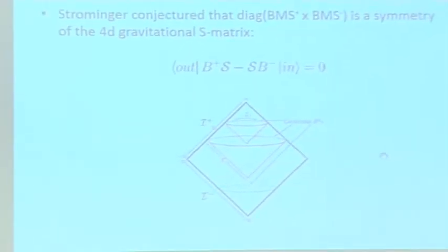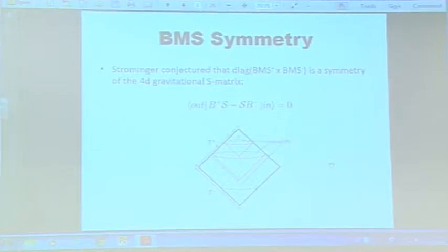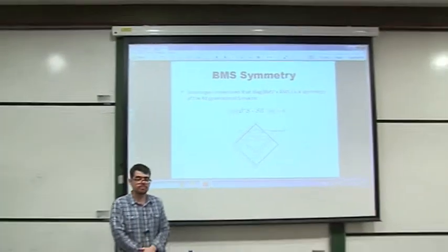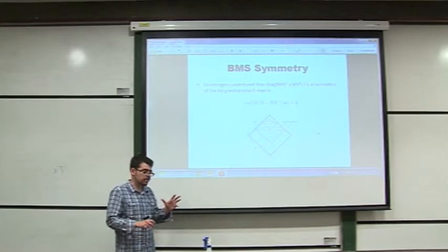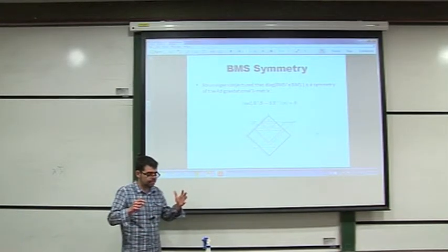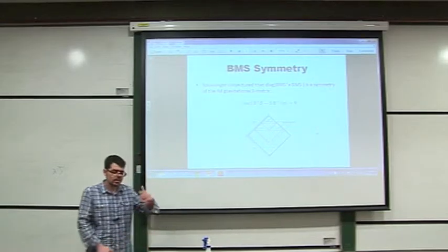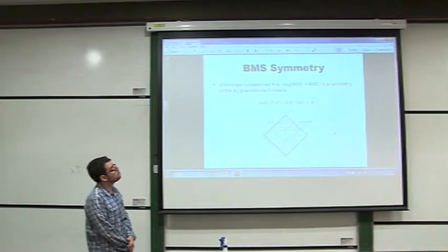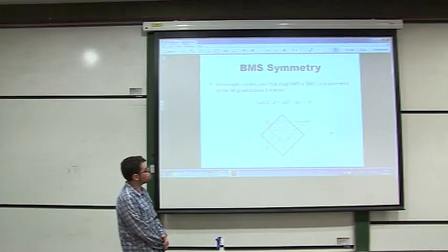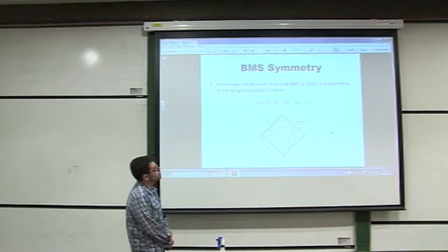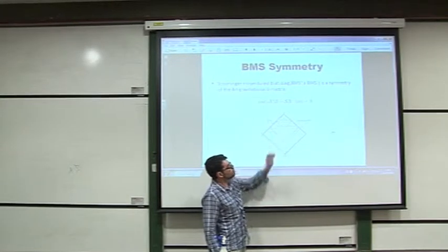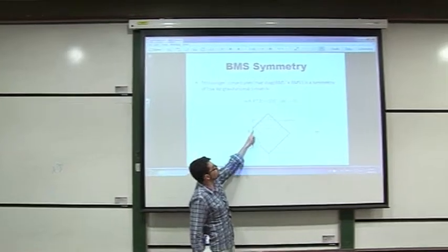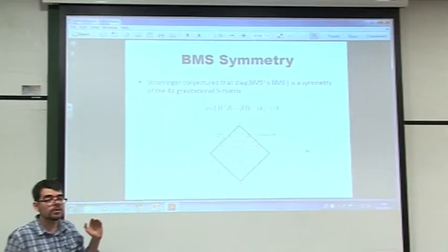The reason there has been a revival of interest in this subject is that Strominger and collaborators have provided a new interpretation for the soft theorems, as being associated with Ward identities associated with some spontaneously broken infinite-dimensional symmetry which acts at null infinity. This symmetry is known as BMS, or Bondi-van der Burg-Metzner-Sachs symmetry. Let me draw the conformal diagram for Minkowski space. The edges of this diagram correspond to null infinity — the two top edges of the diamond correspond to future null infinity, and the two bottom edges correspond to past null infinity.